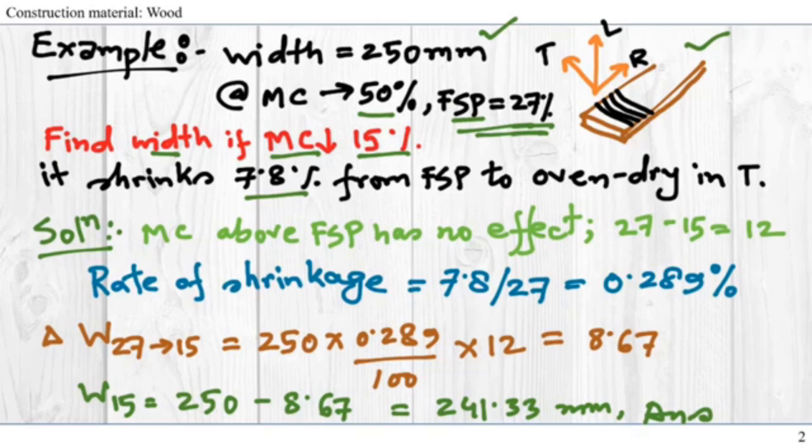It says that the wood plank shrinks 7.8% from its FSP to oven dry, meaning there is no moisture content, in the tangential direction.